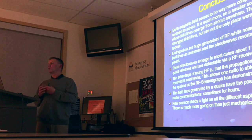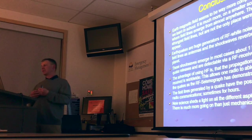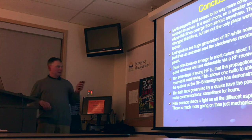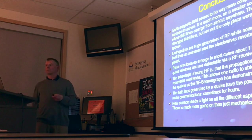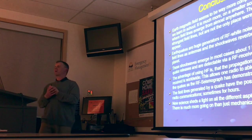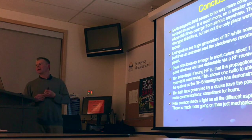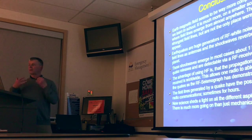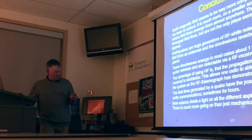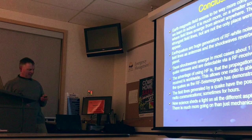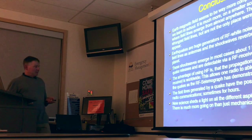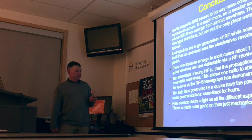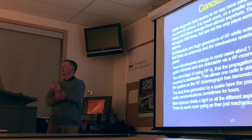If we have multiple stations, we could triangulate the signal and come up with a region where the earthquake will happen. Once we can triangulate, we could start predicting quakes and help people evacuate. One advantage of using HF is that it propagates worldwide, so in the ideal scenario every station in the world could see that quake.